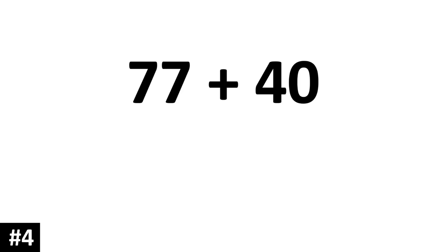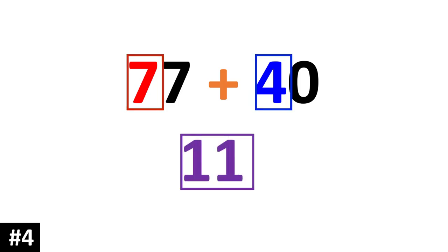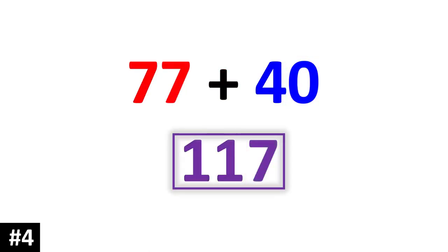77 plus 40. 7 tens plus 4 tens gives us 11 tens. Then we add the ones: 7. So 77 plus 40 is 117.